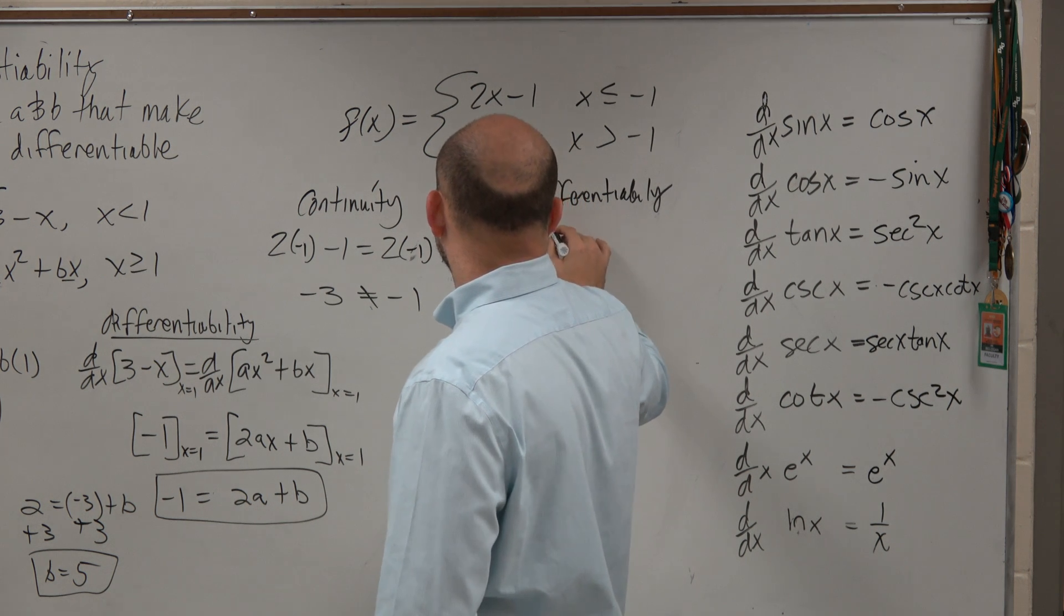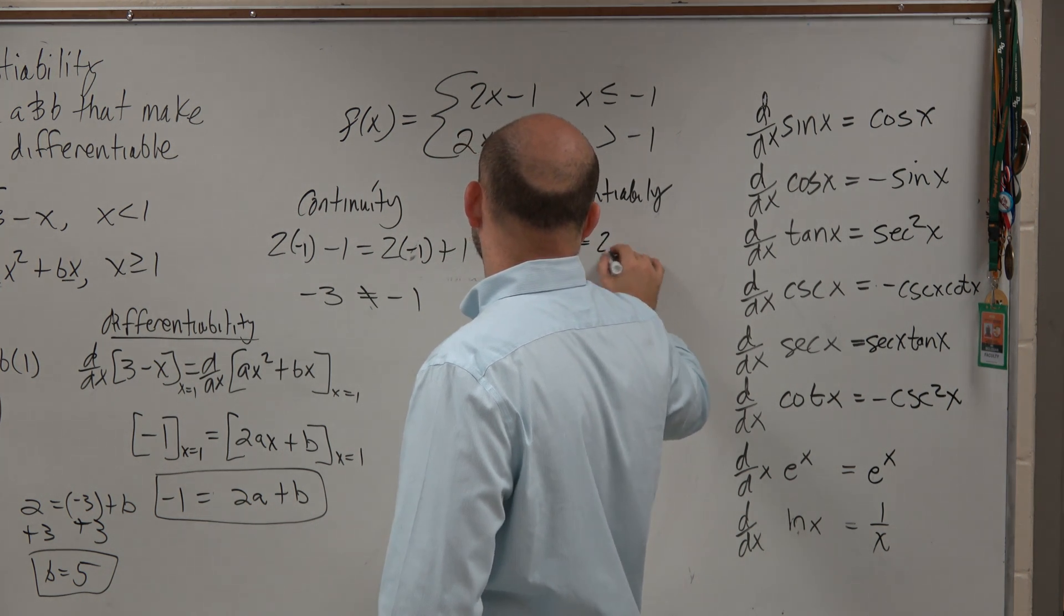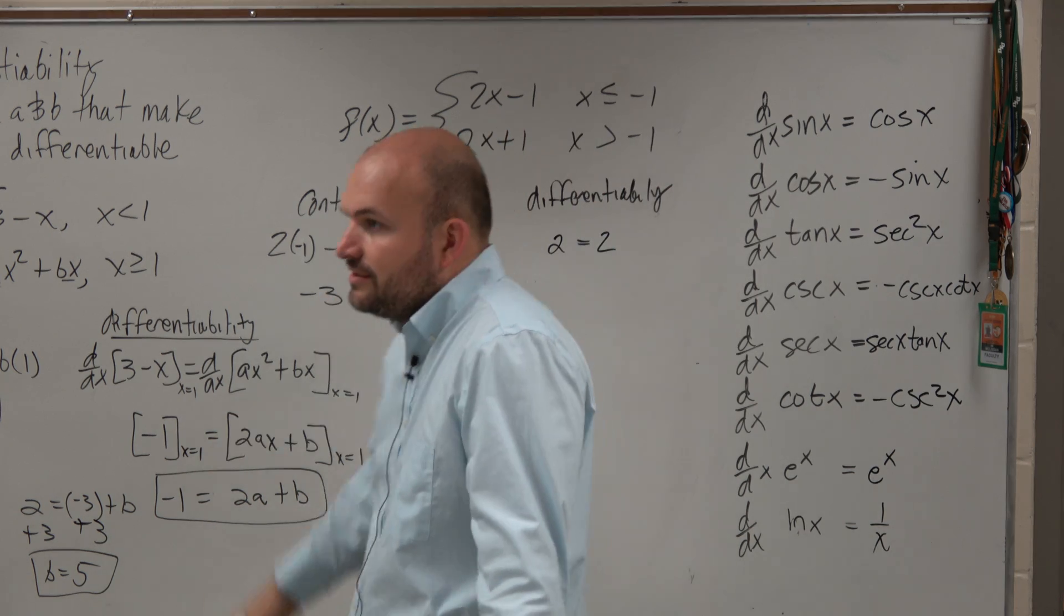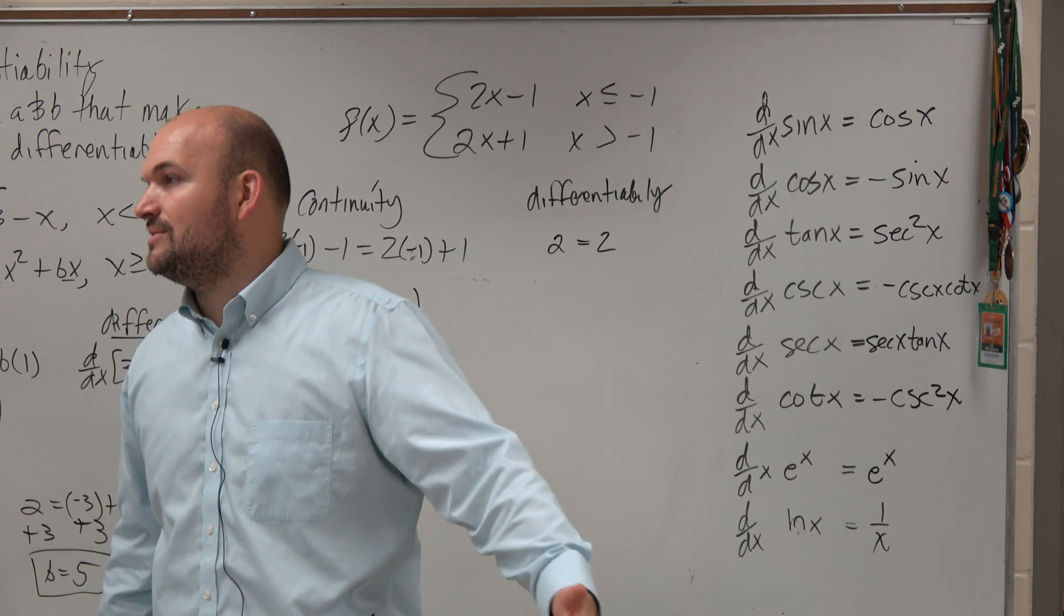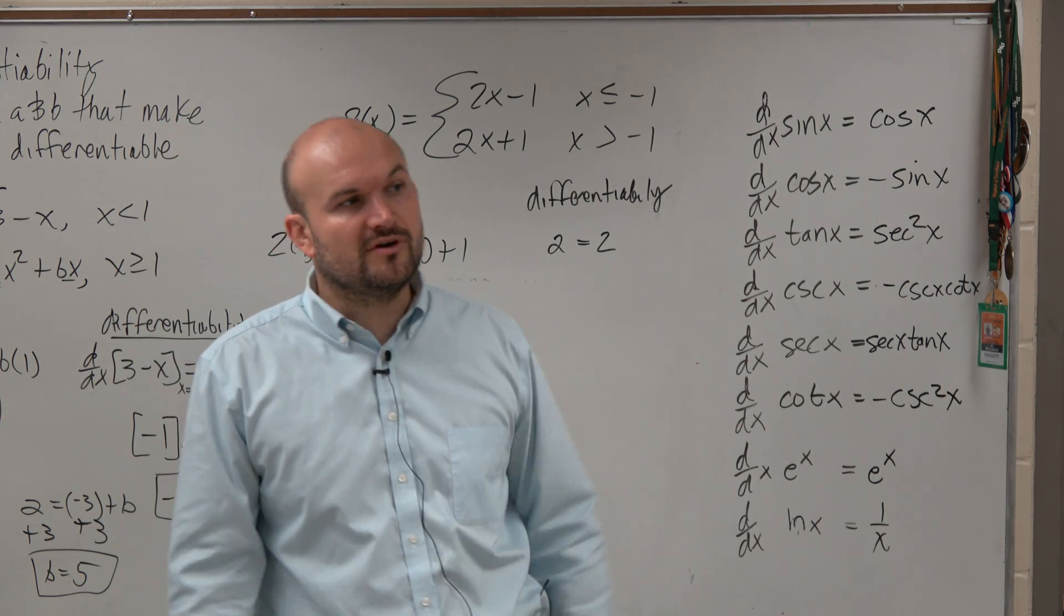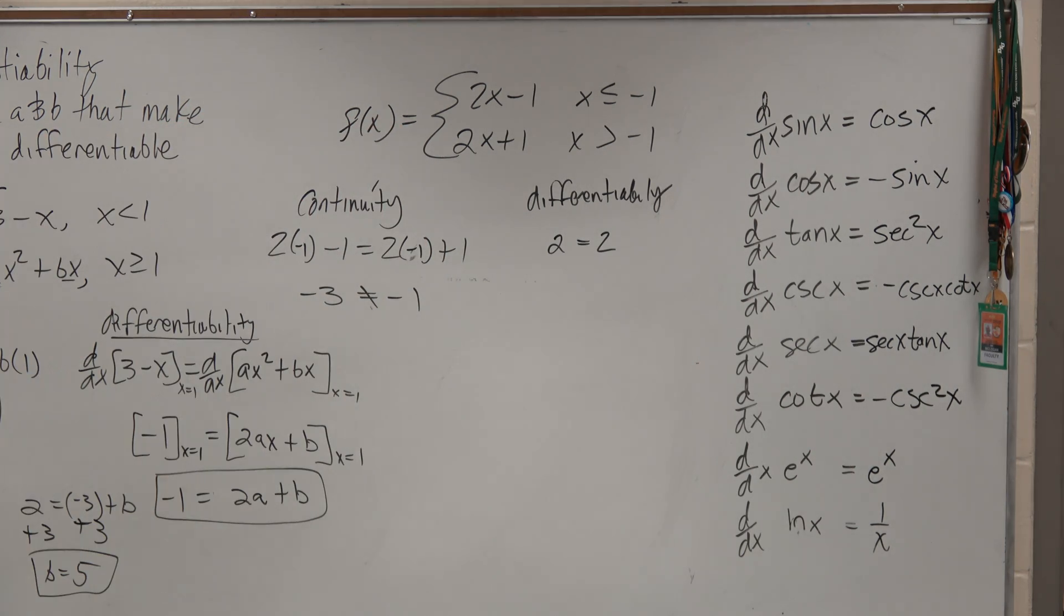Because then here you'd have 2 is equal to 2. Well, at 1, that's fine, they're equal to each other. So they're differentiable on the left and right hand side, but they're not continuous. So it's not a differentiable function.